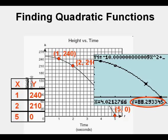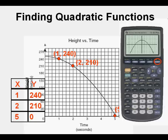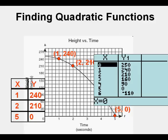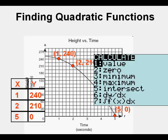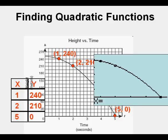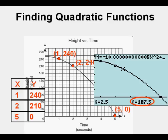And the next thing we can do is we can press second, then graph, and see a table view. And in the table view, we can see that the points 1,240, 2,210, and 5,0 are in fact here, proving the validity of the function. And finally, we can press second, then trace, and value. And what we can do with this menu is we can evaluate particular values of x to see what the height would be. And here if we enter 2.5 and press enter, we can see that at 2.5 seconds, the object is 187.5 meters from the ground.